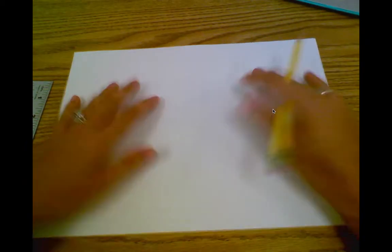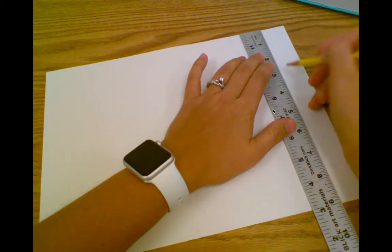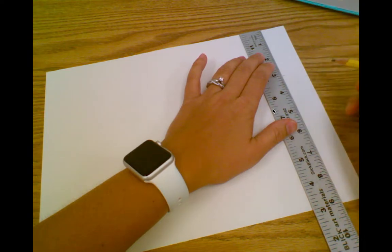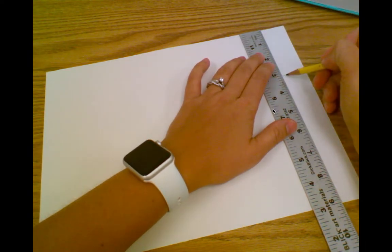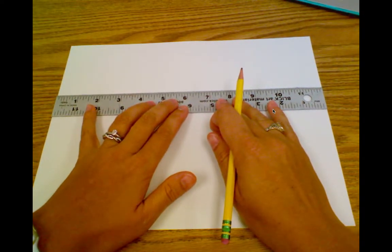Before you can start your clay project we are going to make a pattern or template to show what our sides are going to look like. When we do this our sides can be no taller than three inches, so I'm going to measure down on the ruler three inches when my paper is long ways and then draw a line straight across the paper.